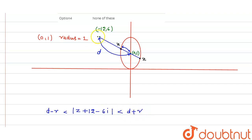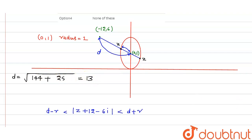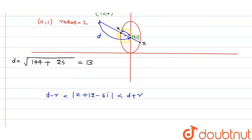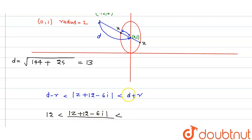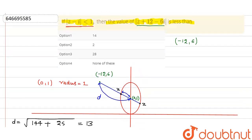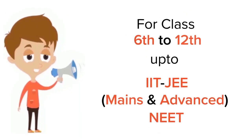Now d is the distance from (0, 1) to (-12, 6), which equals √((-12 - 0)² + (6 - 1)²) = √(144 + 25) = √169 = 13. So we get: 13 - 1 < |z + 12 - 6i| < 13 + 1, which gives 12 < |z + 12 - 6i| < 14. The question asks about less than 14, so option one is our answer.